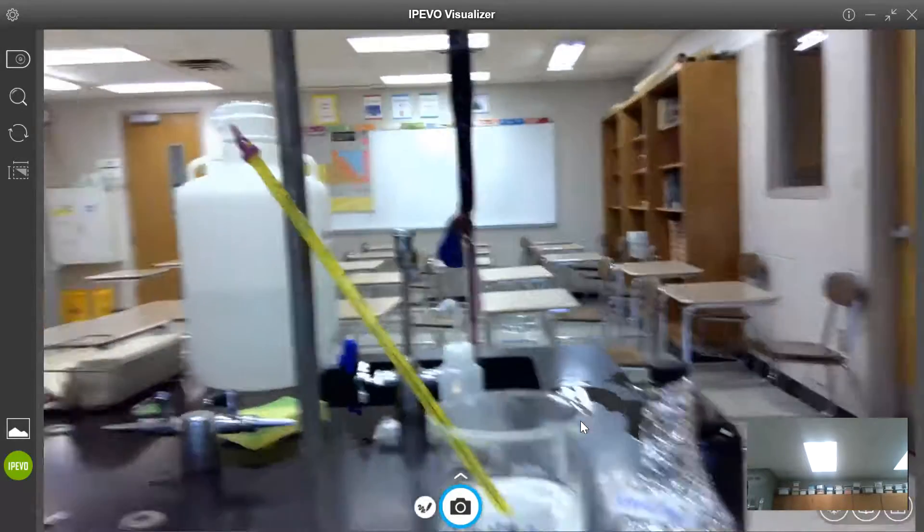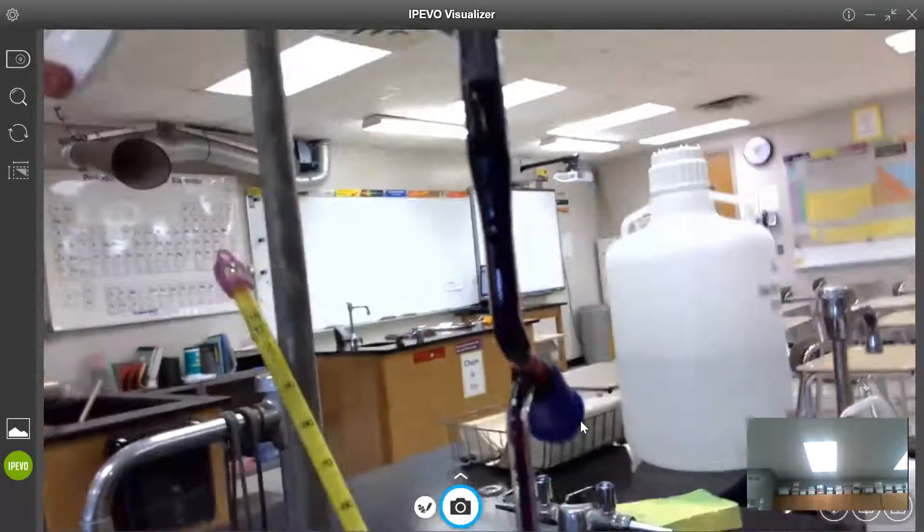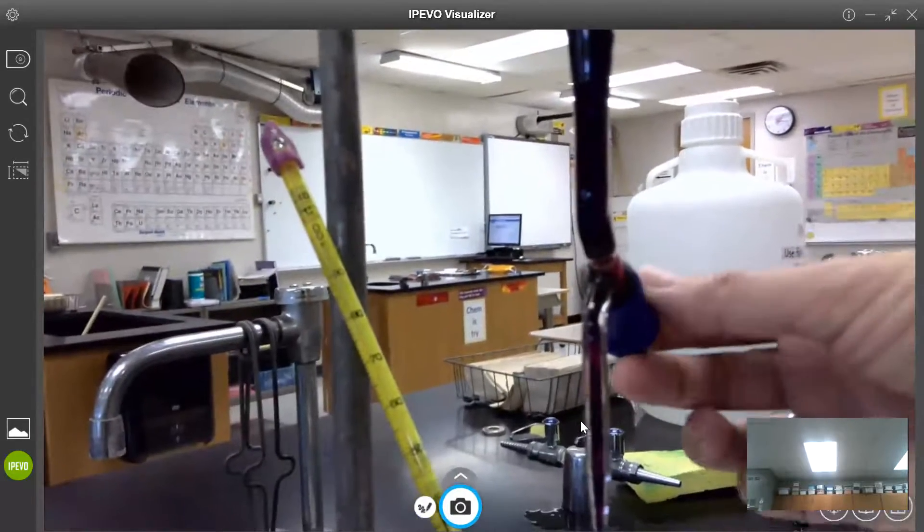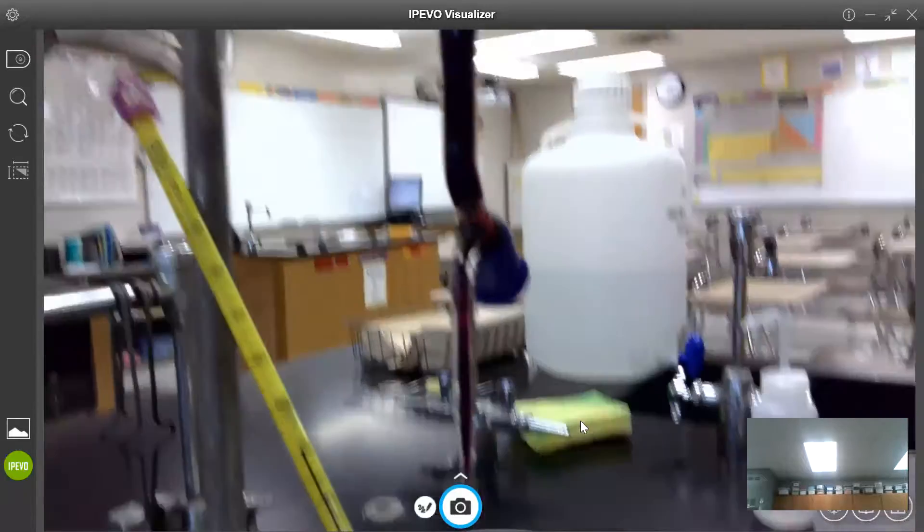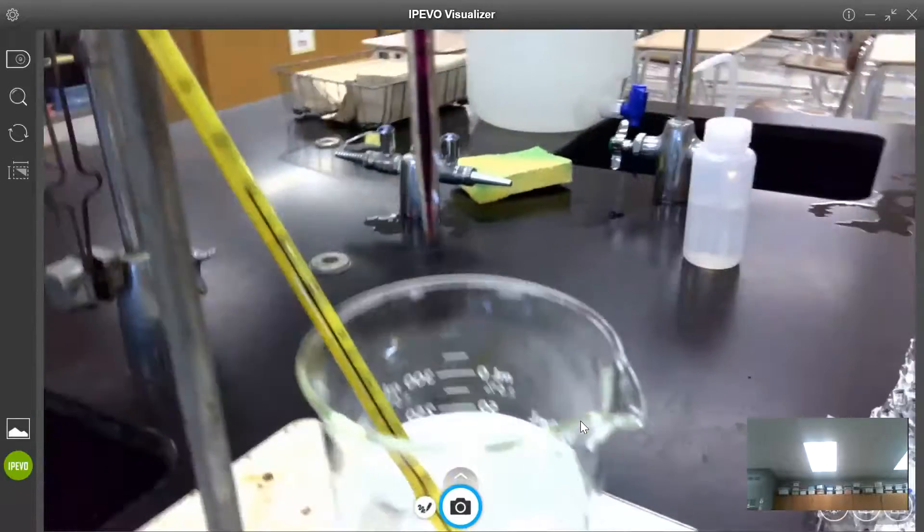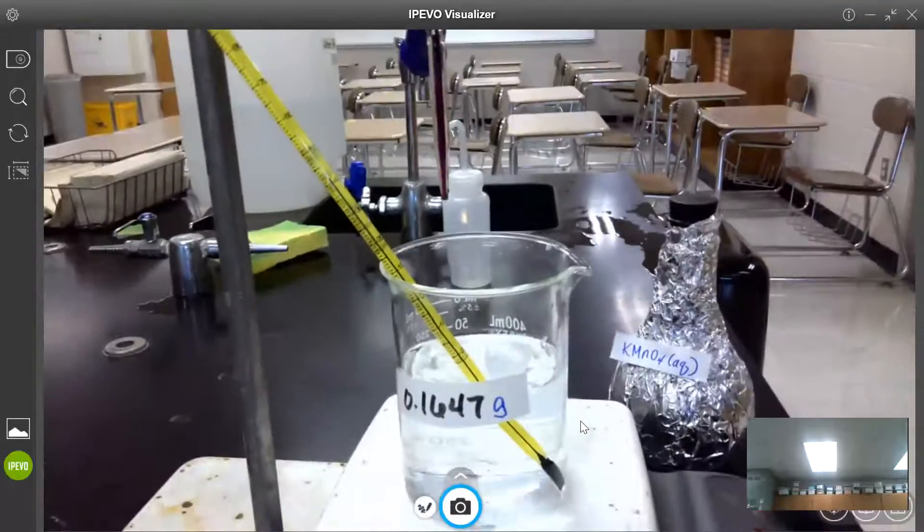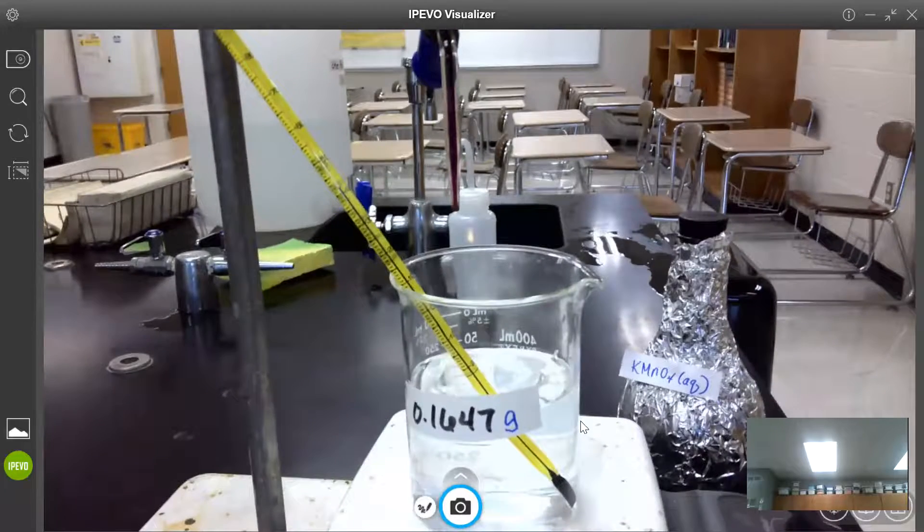And at the bottom of this you can see that we have this valve, which is how we're going to add the KMnO4 to the titration. So mostly we're going to be focused on what's happening here in the beaker and at the bottom of the burette.